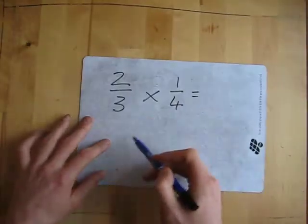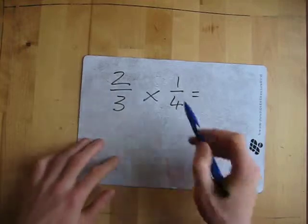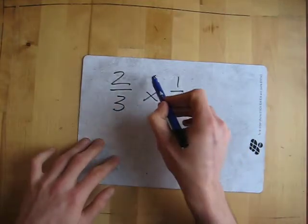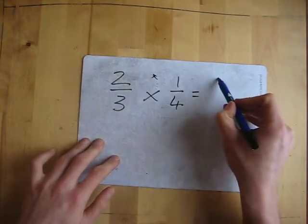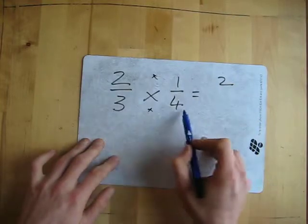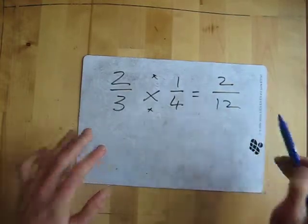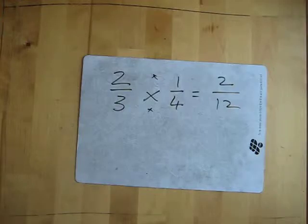Let's have a look at what I mean. If we've got two thirds times one quarter, all I do is multiply the top two numbers. Two times one is two. Then multiply the bottom two numbers. Three times four is twelve. And that is as easy as it gets.